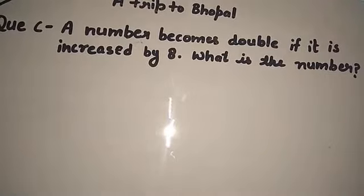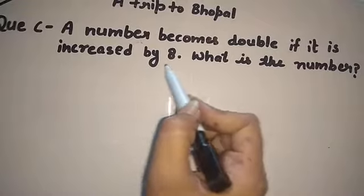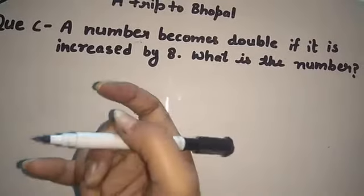Now question number C I have written here. So the question is: a number becomes double if it is increased by 8. What is the number?